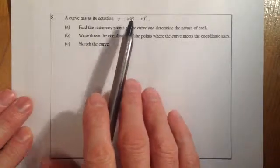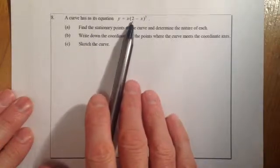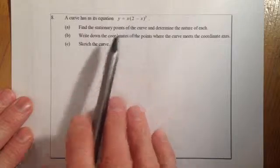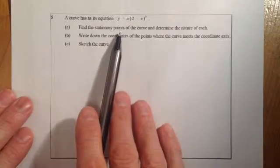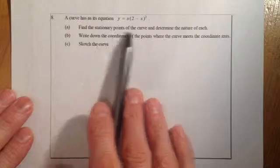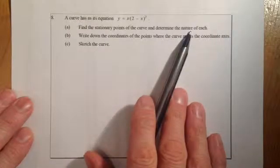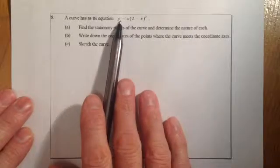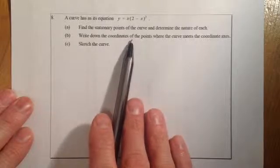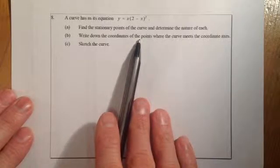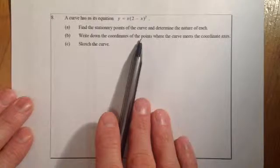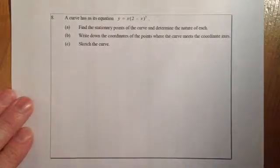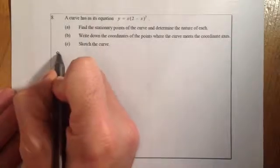First thing I'm going to be doing is differentiating this equation after preparing it. We're going to set it equal to zero for its gradient, find the stationary points, make a nature table to find the shape of the graph, substitute the x values into y equals to find the y coordinates, then find where the curve meets the coordinate axes by making x equal to zero and then making y equal to zero, and then sketch based on that.